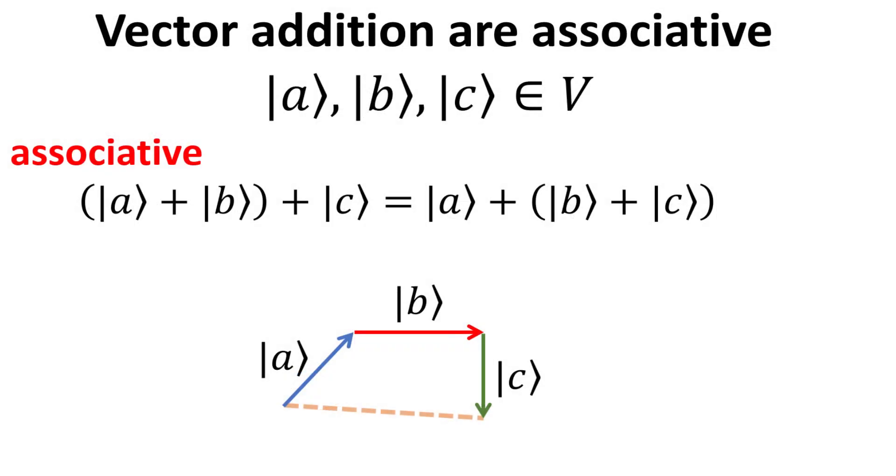The associative law states that the sum of three vectors does not depend on which pair of vectors are being added first. You can add the A and B kets first, then C, or alternatively, add the B and C kets, then A.